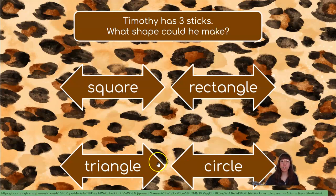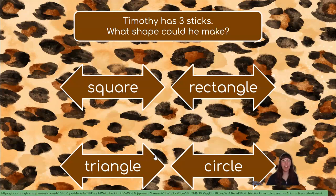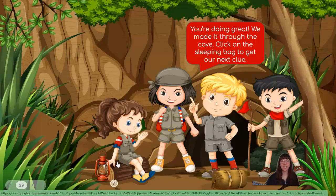How about a triangle? Could Timothy make a triangle with three sticks? Yes, he could! Very good! A triangle has three sides, so with each stick being one side, Timothy could absolutely make a triangle. You're doing great! We made it through the cave! Woo!